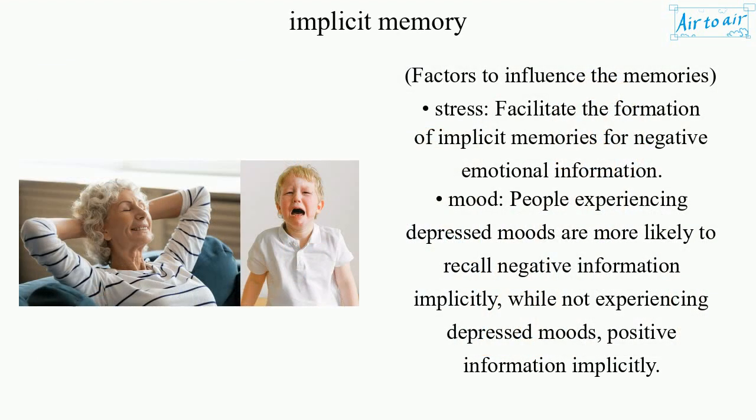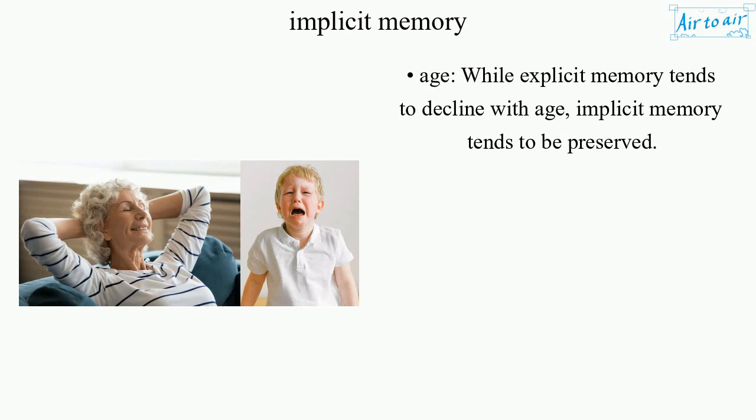Factors that influence the memories. Stress can facilitate the formation of implicit memories for negative emotional information. Mood: people experiencing depressed moods are more likely to recall negative information implicitly, while those not experiencing depressed moods recall positive information implicitly. Age: while explicit memory tends to decline with age, implicit memory tends to be preserved.